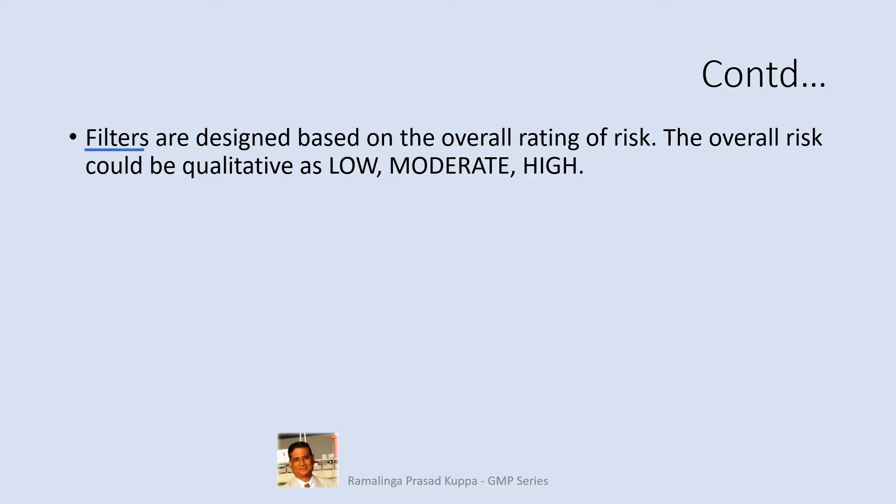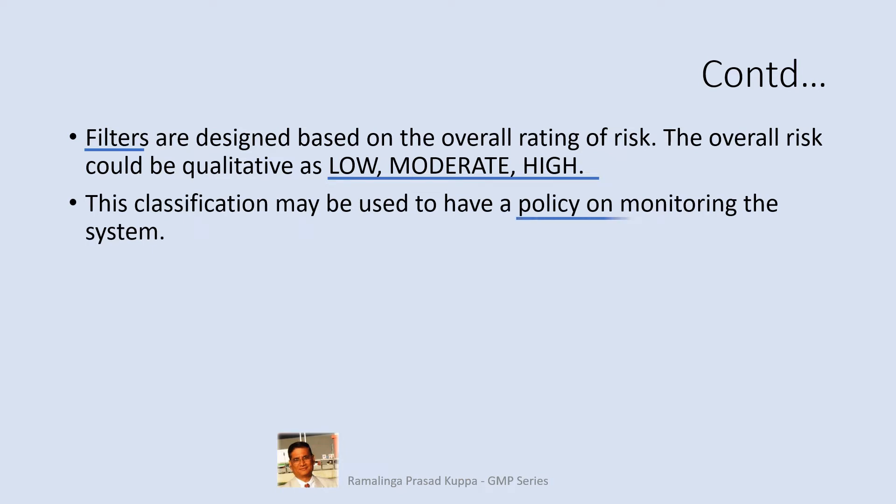Filters are designed based on the overall rating of risk. The overall risk could be qualitative — as low, moderate, or high. Filters are basically one way of deciding the strategy for monitoring the operations. The filters could be qualitative as low, moderate, or high. The quantitative filters could be on a range of scoring for monitoring strategy. This classification may be used to have a policy on monitoring the system. A low filter indicates that the system has low potential for failure and needs lesser focus and controls for routine compliance. Moderate filter is for systems that have some possibility of failure, so moderate focus and controls are required for monitoring. The frequency will be moderate in such cases.